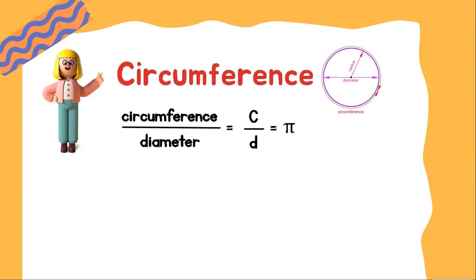Now, let's tweak it to find for the circumference of the circle. Circumference of the circle is equal to pi times D, or it can also be circumference of the circle is equal to 2 times pi times R, where R stands for the radius, since the diameter is equal to 2 times radius.